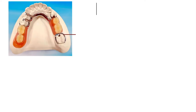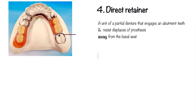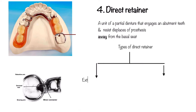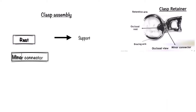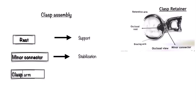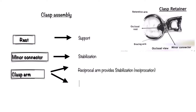Next comes the direct retainer. It is a unit of the partial denture that engages an abutment tooth and resists displacement of the prosthesis away from the basal seat. There are two types of direct retainer: extracoronal and intracoronal. In extracoronal, the clasp type retainer is most commonly used. The clasp assembly consists of a rest, the minor connector, and the clasp arm. The clasp arms are the retentive arm and the reciprocal arm. The reciprocal arm is rigid and is placed above the height of contour opposite the retentive clasp, whereas the retentive clasp lies cervical to the height of contour.